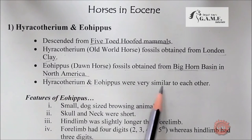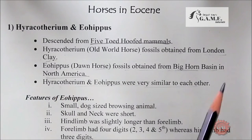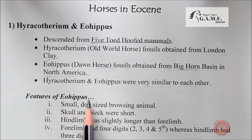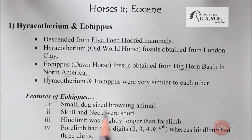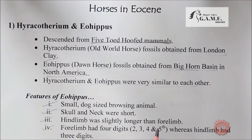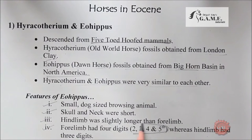Heracotherium and Eohippus were very similar to each other. Features of Eohippus include: small dog size, browsing animal, short skull and neck, hind limb slightly longer than forelimb, forelimb had four digits — second, third, fourth, and fifth — whereas the hind limb had three digits only.